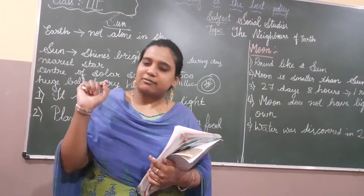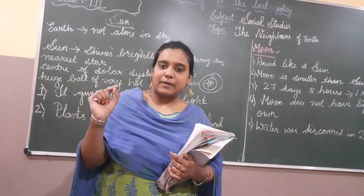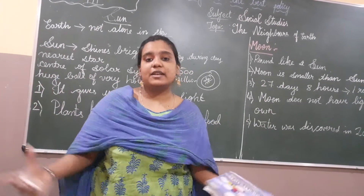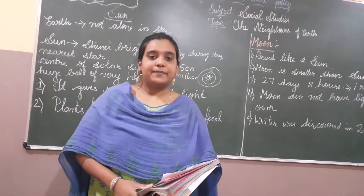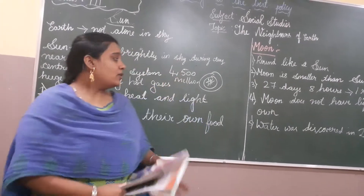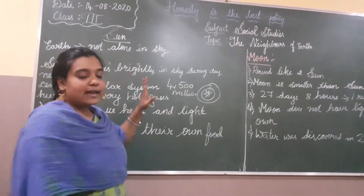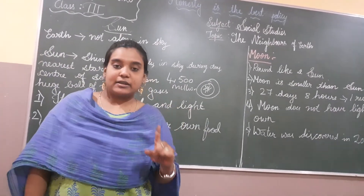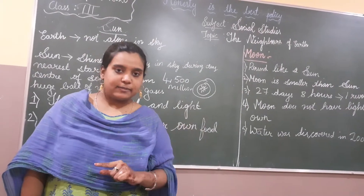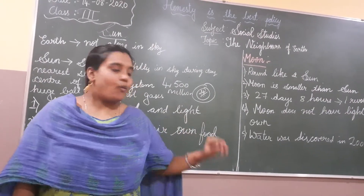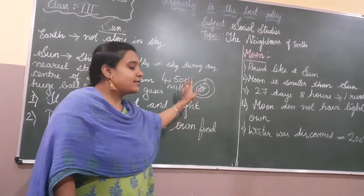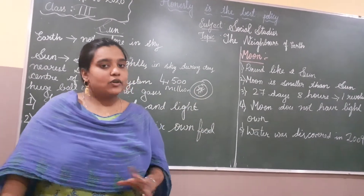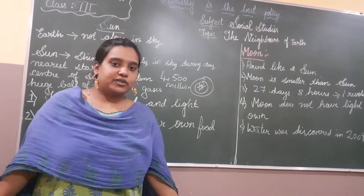Stars seem somewhat small to our naked eyes, but they are actually very big. Earth has its family and its neighbors. One such neighbor is the sun. If there is no sun, we are not able to grow at all.